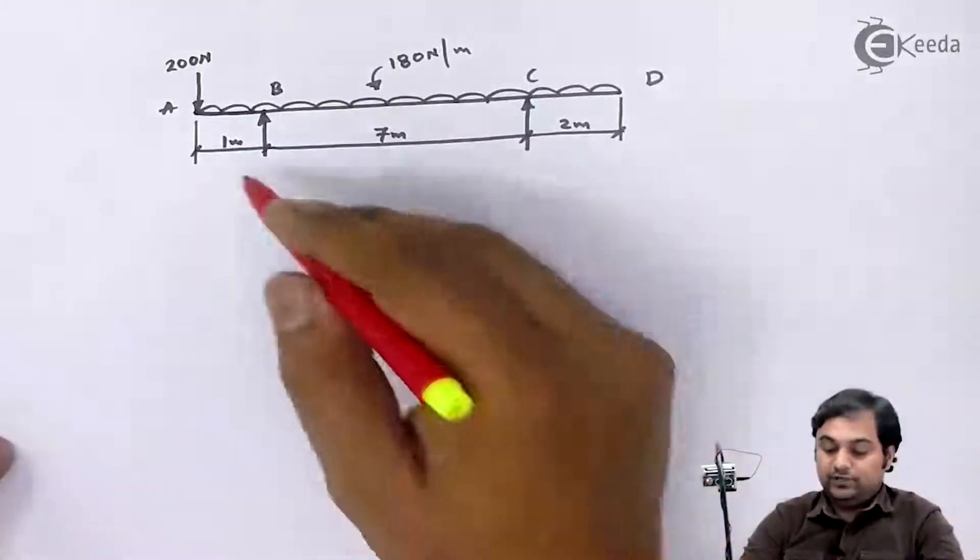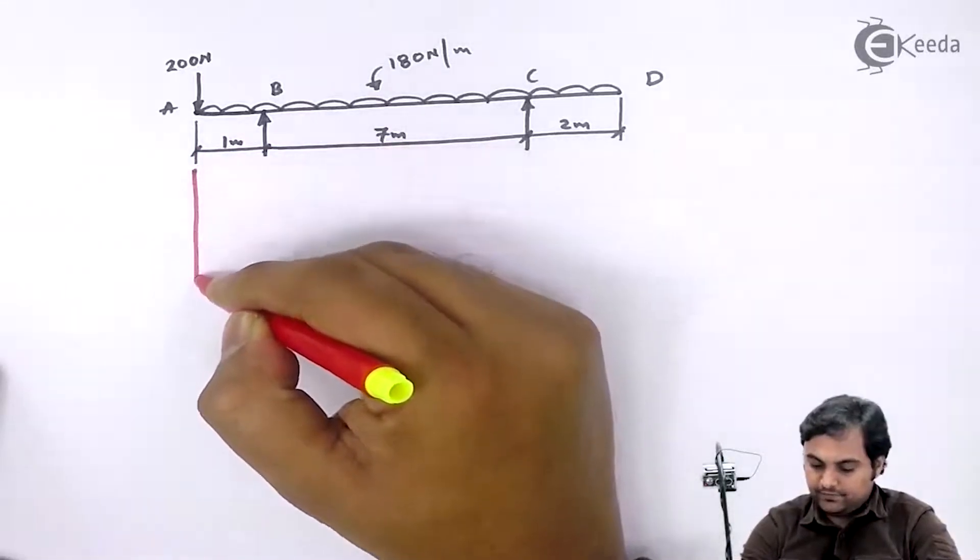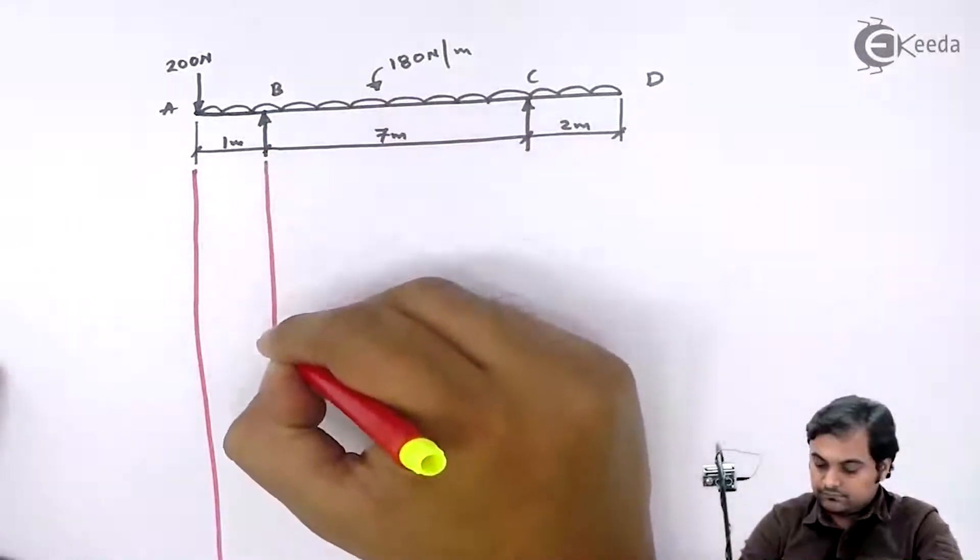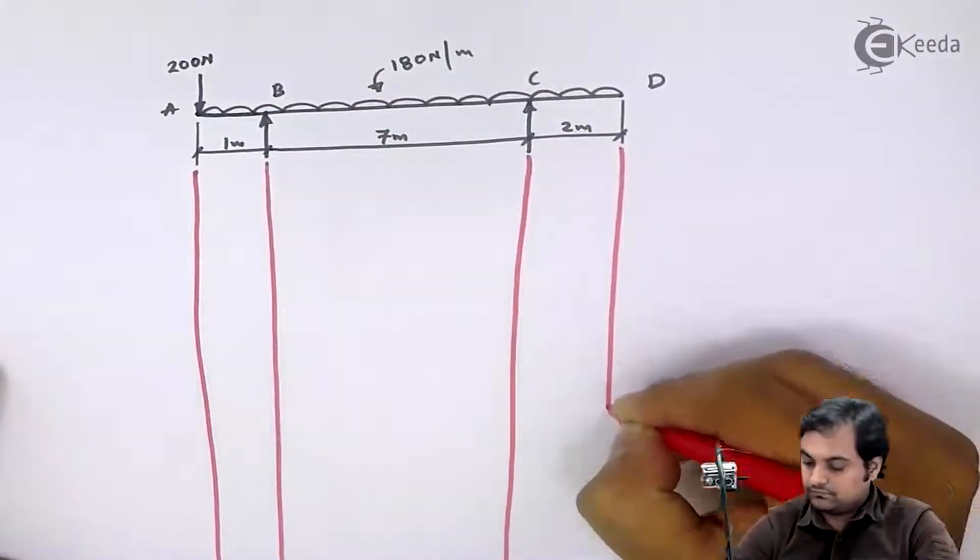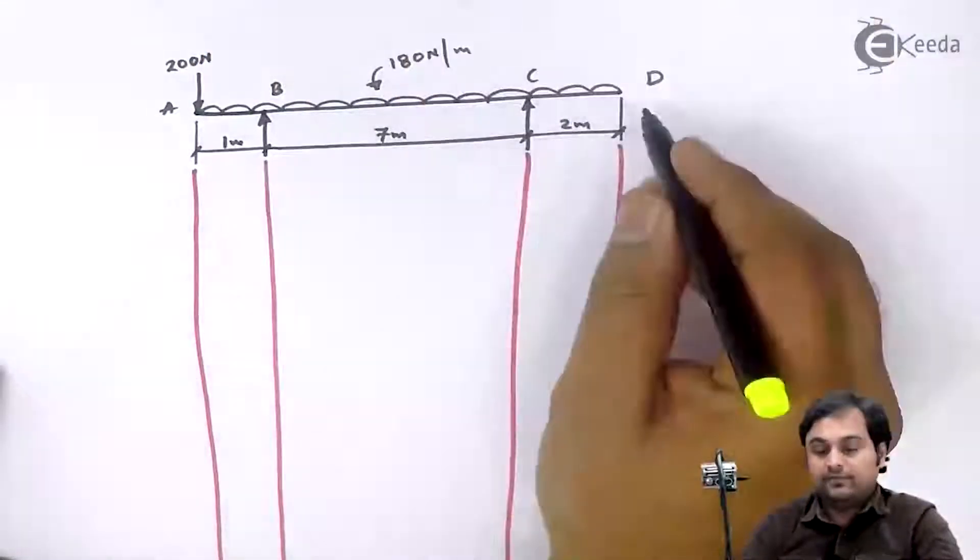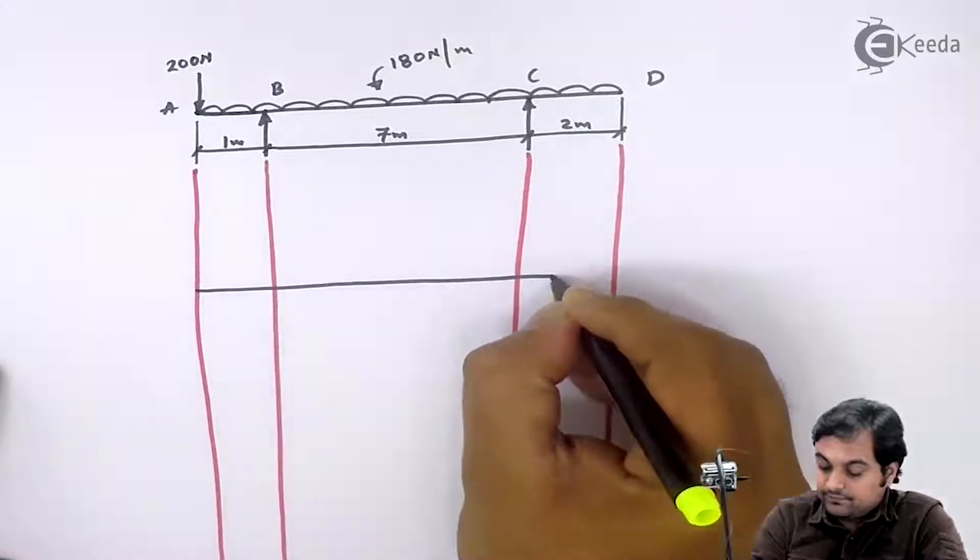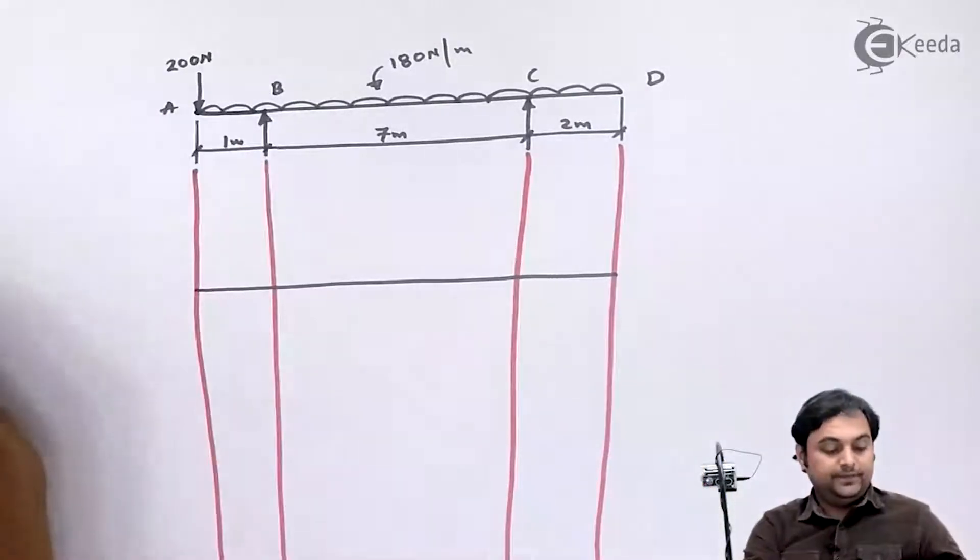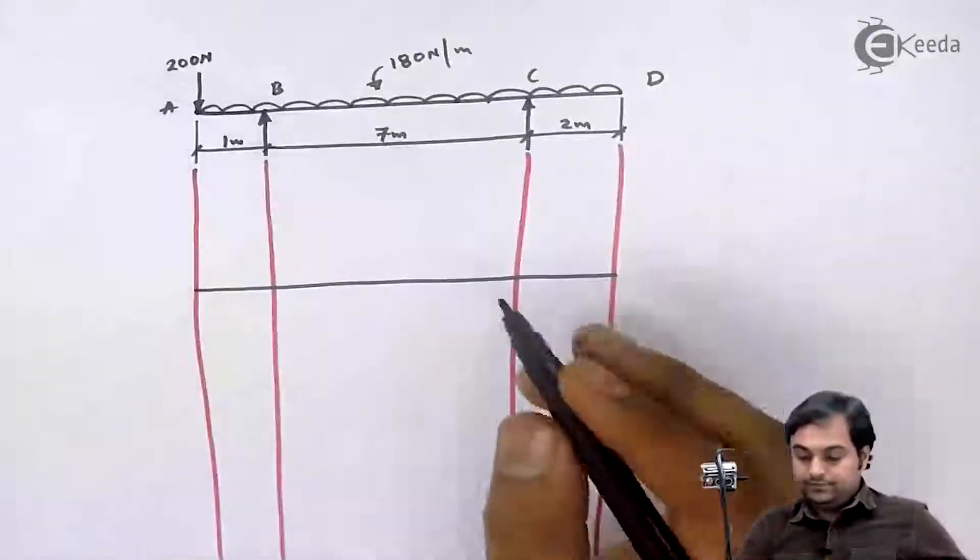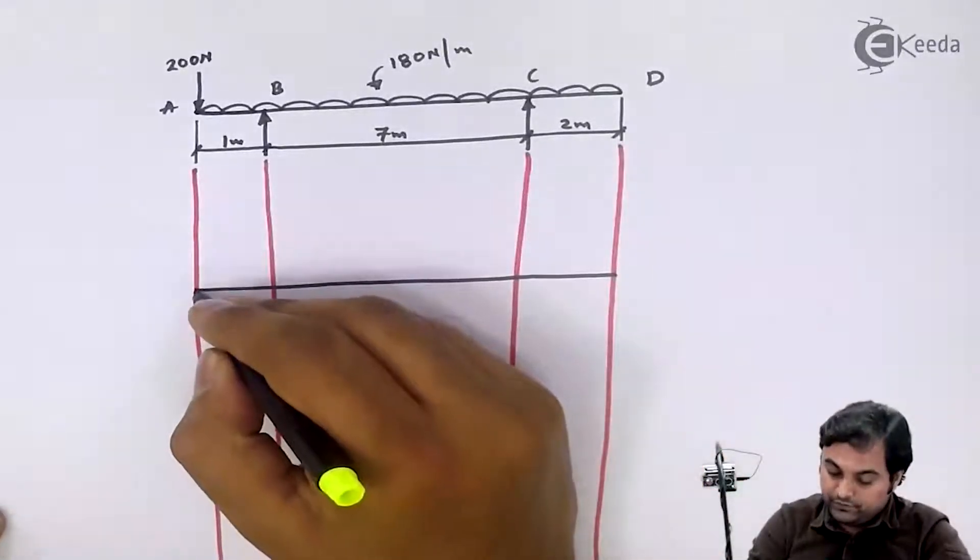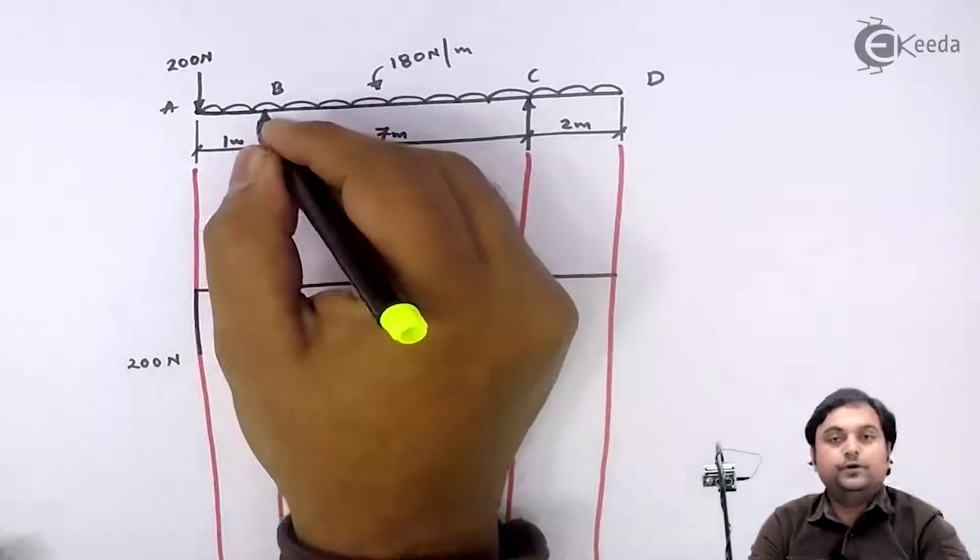Here we have to extend all the points starting with point A. For drawing SF, we should draw a straight line. SF at point A, the value is minus 200 Newton, so it will be negative. SF at point B.